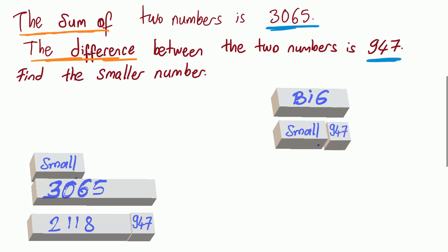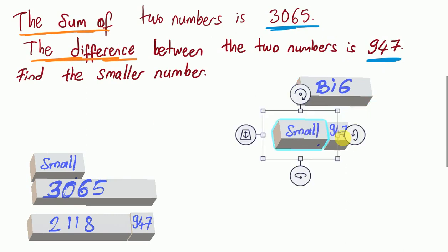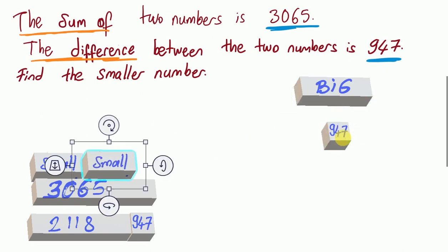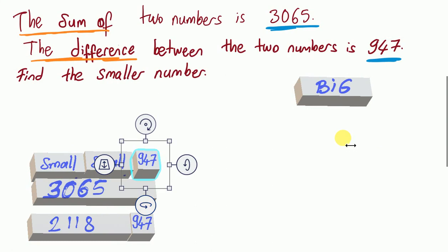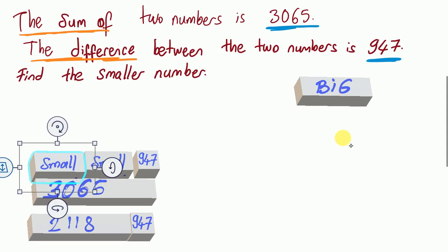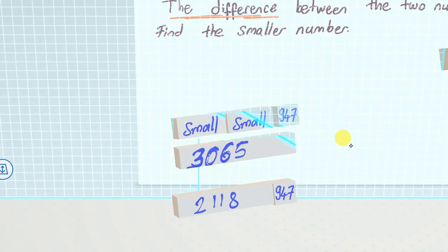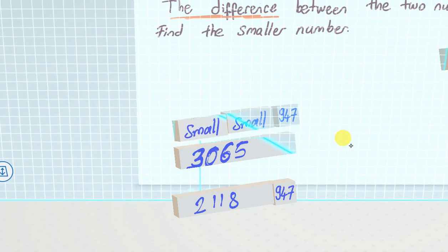Can I replace the big number in the equation? Big number plus small number equals 3065. We can replace big number with small number plus 947. So: small number plus small number plus 947 is equal to 3065.